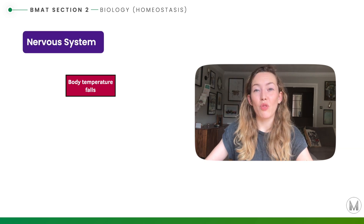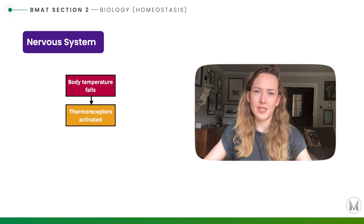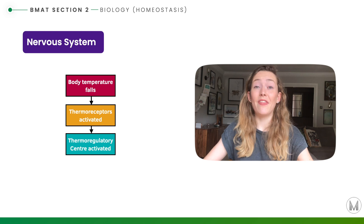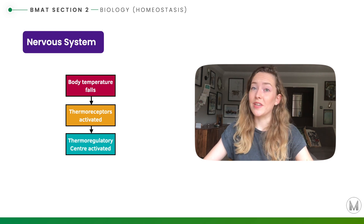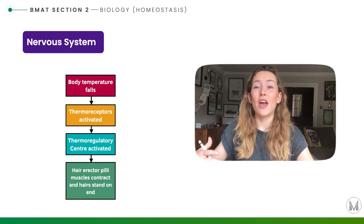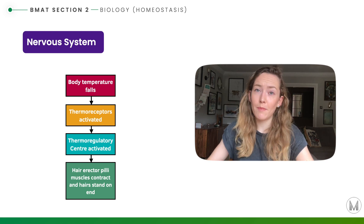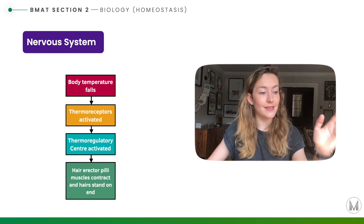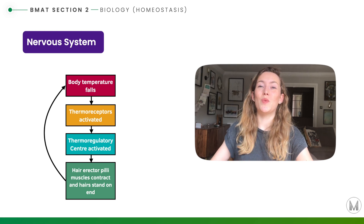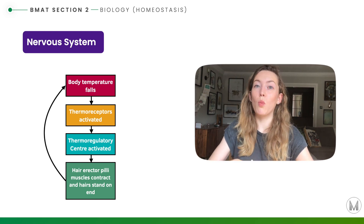Here's an example of how the nervous system controls homeostasis. If we have a fall in our body temperature then our thermoreceptors are going to be activated, and then our thermoregulatory centre is also going to be activated, leading to a response. A response might be our erector pili muscles contracting so our hairs stand on end, which leads to a correction and maintenance of our body temperature — warming us back up.